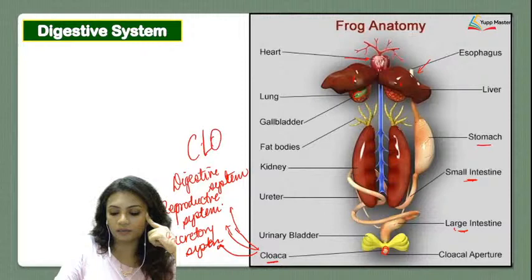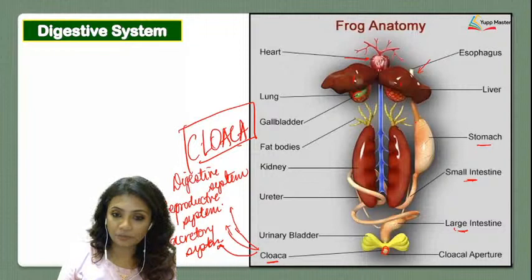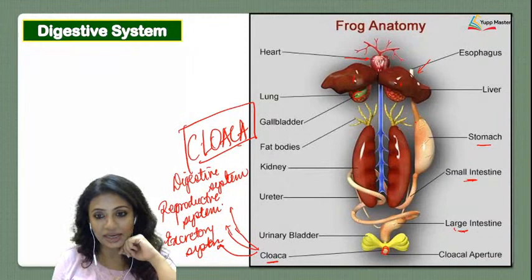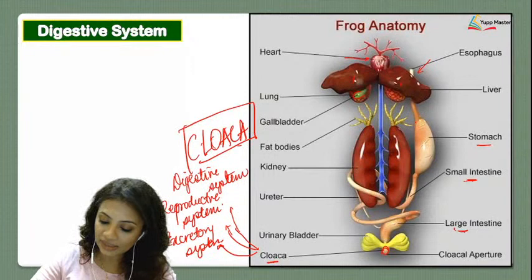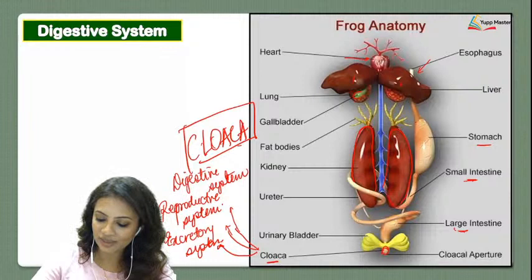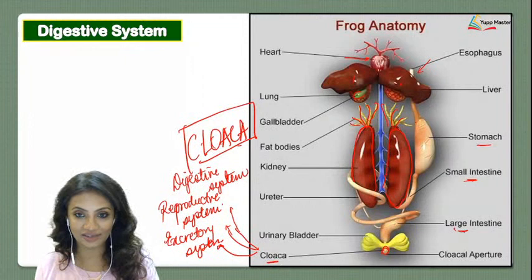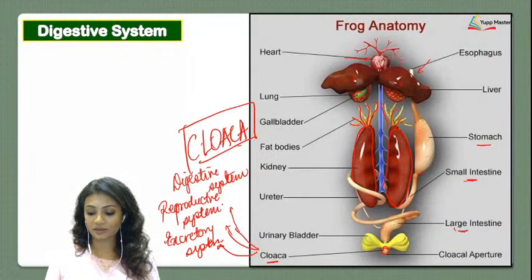The cloaca is a common opening for the digestive, reproductive, and excretory systems. The diagram also shows kidneys, and on top of the kidneys are fat bodies — their significance will be covered when we study the excretory system. Between the stomach and the duodenum, there is also a pancreas.